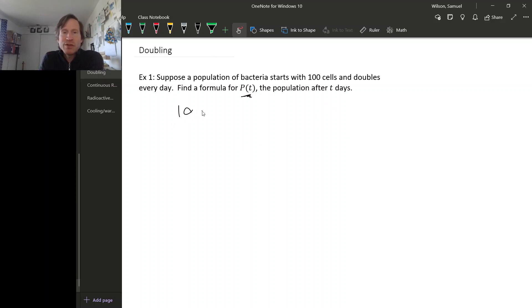If we're starting with a hundred, after one day it's going to double, so that's times two. But then after two days it's going to double again, so times another two. After three days it's going to double again. You can see the number of twos here that I'm multiplying together is matching the number of days that I've waited.